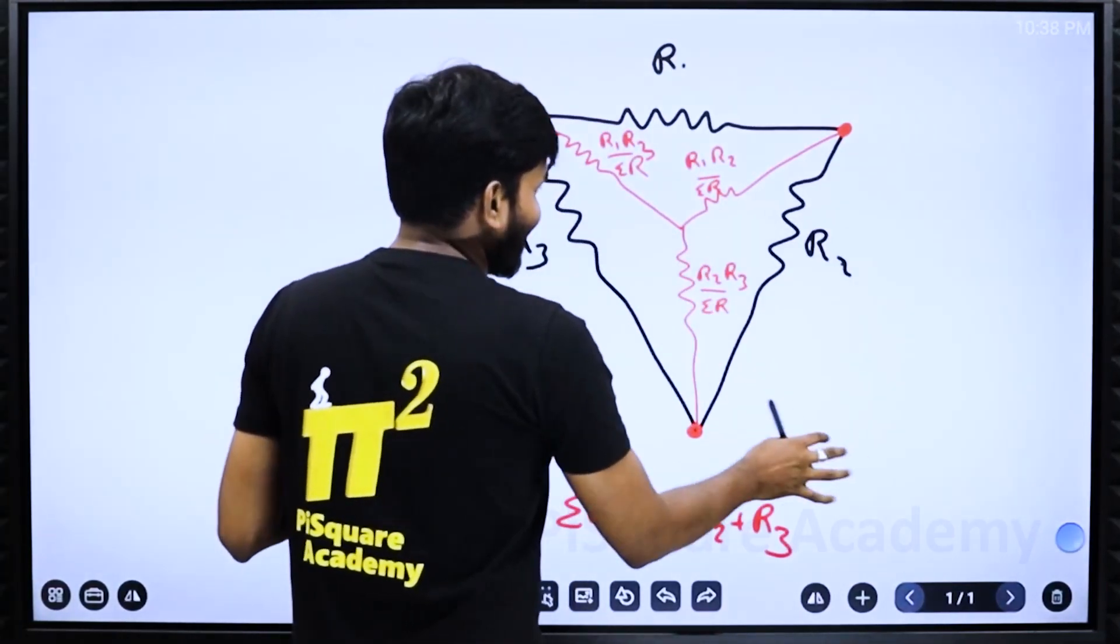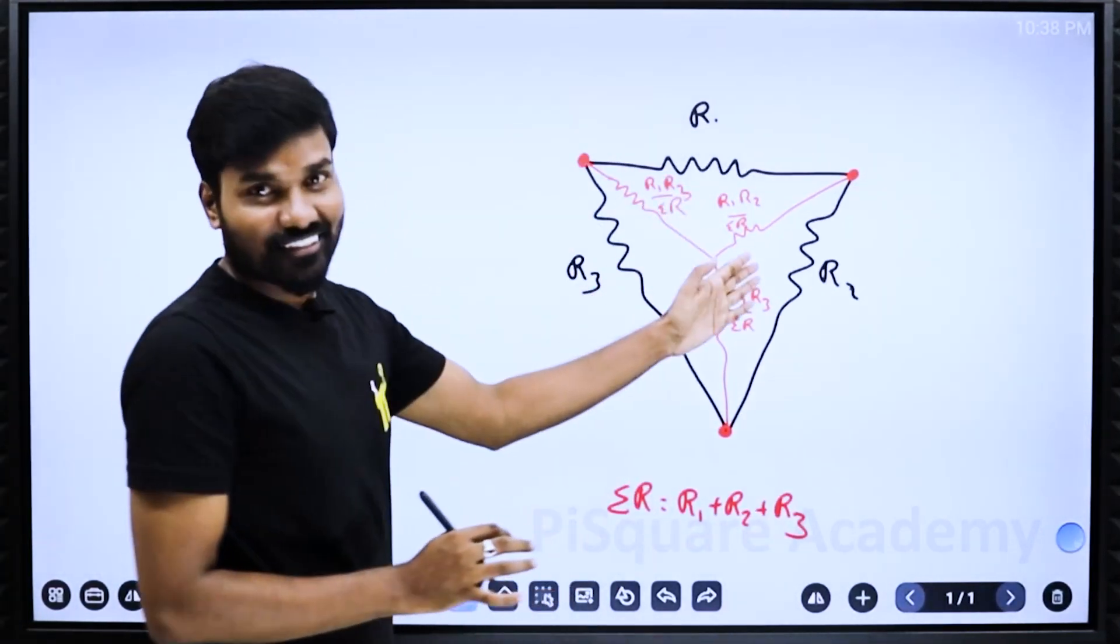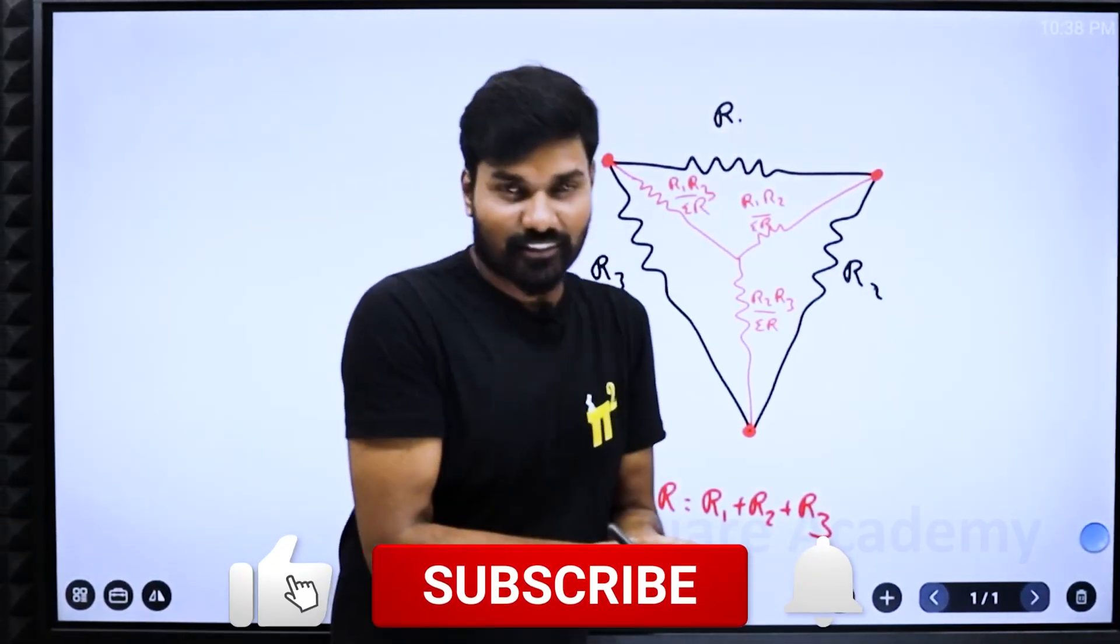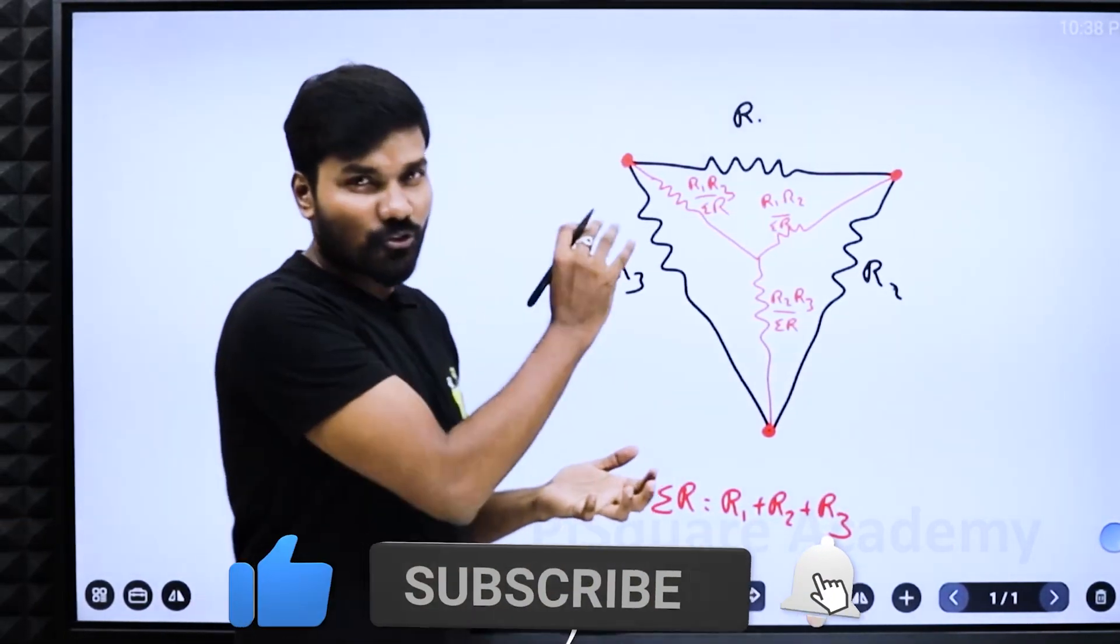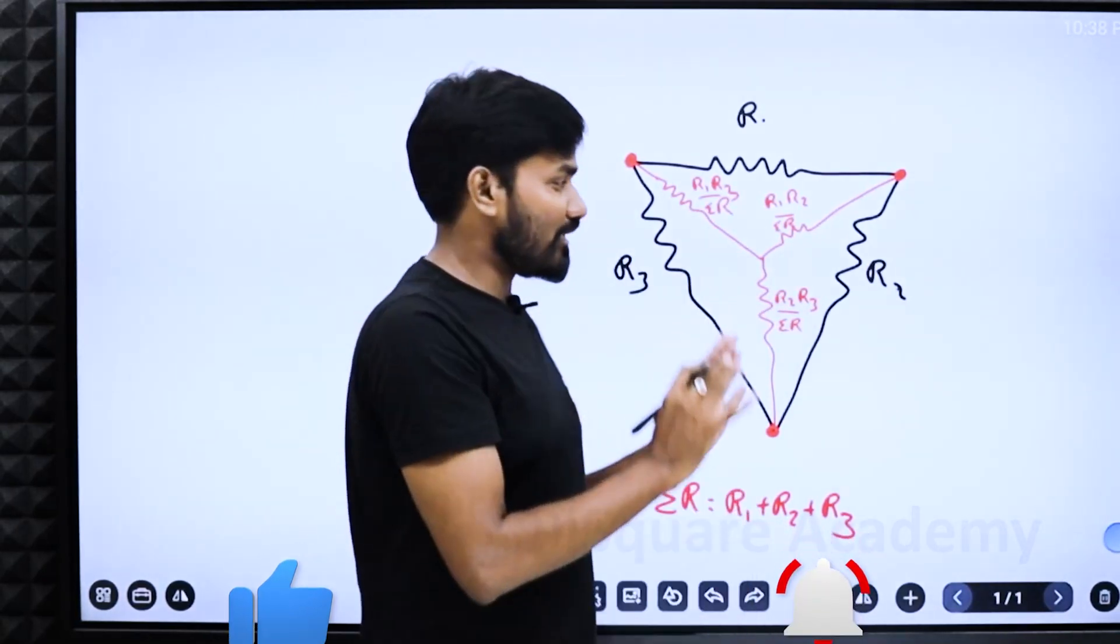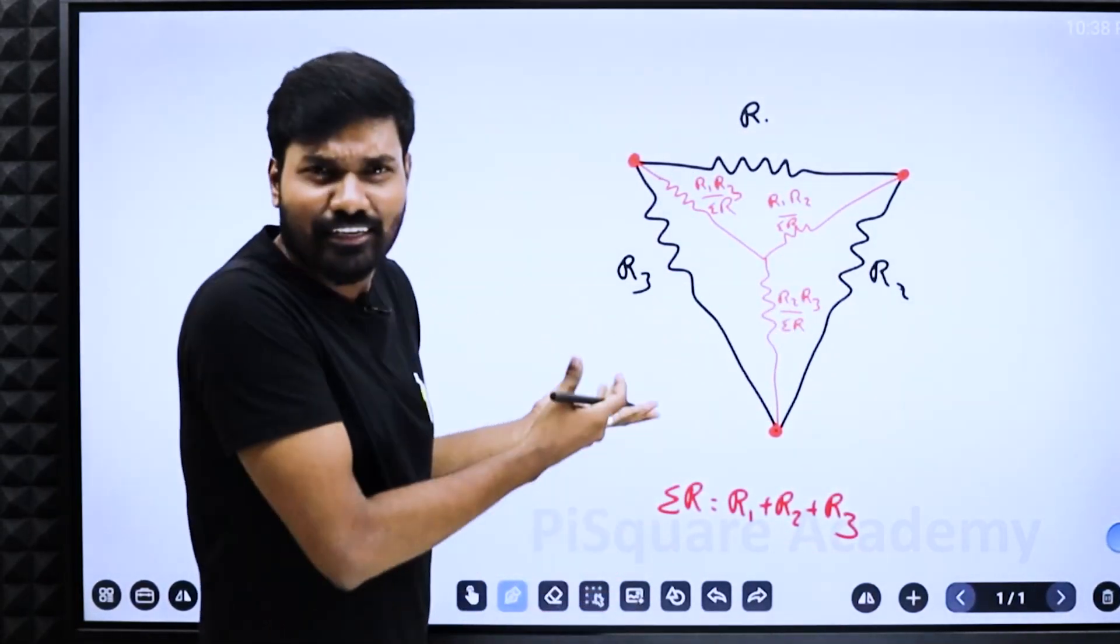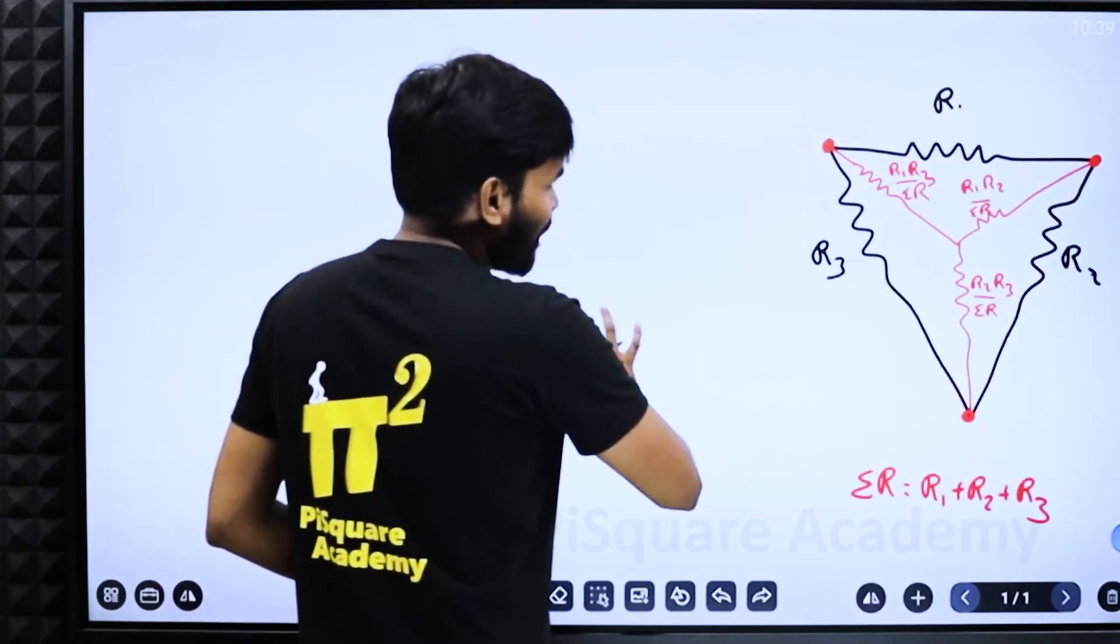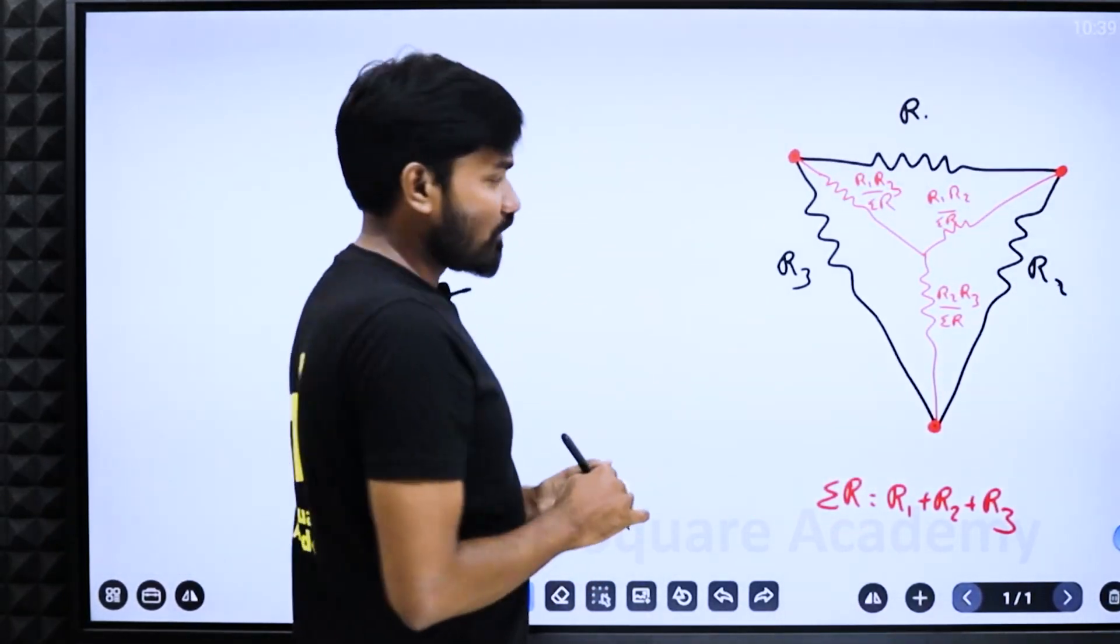There you go. That's the formula. You have not remembered the formula, you have applied a logic. I will give you a tip also to apply this logic. Now comes the other one, star to delta.